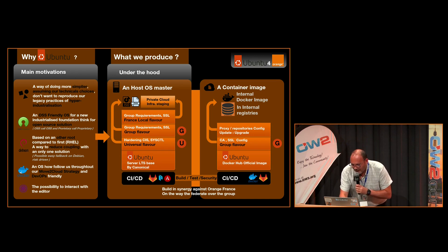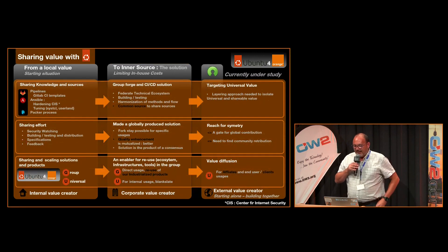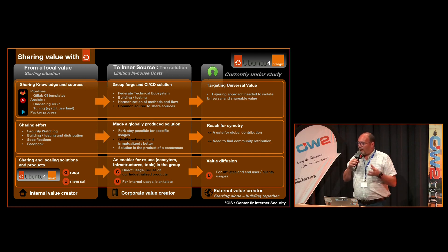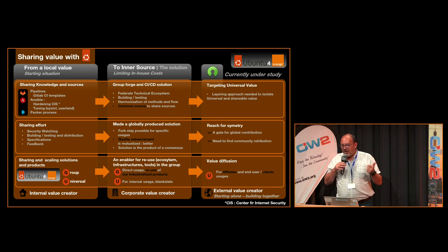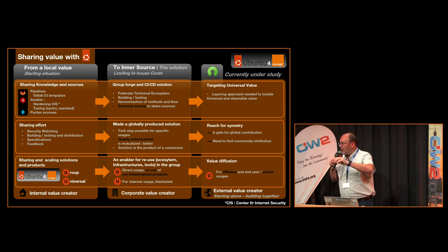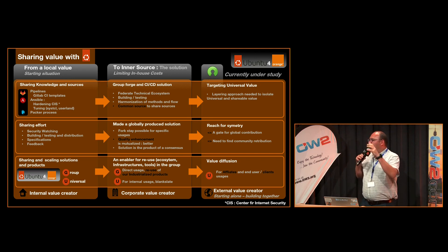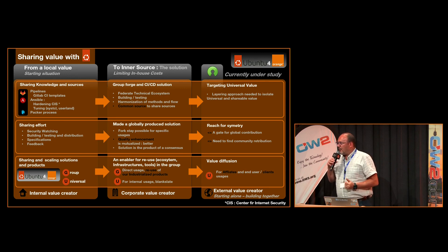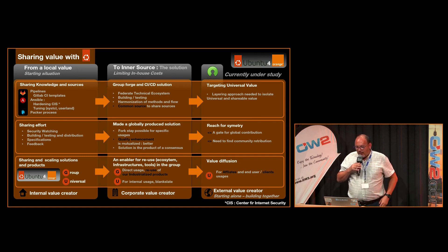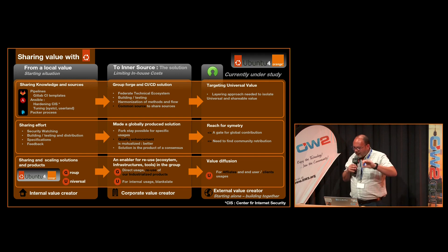So we are going to speak about InnerSource. Using open source software, for us, is generally about sharing value. So logically, we want to share — sharing knowledge and sources, sharing our way to build, to test, to deliver. The goal is to move from a local scope value for our historically defined Ubuntu to a universal value. We already use Ubuntu, but we want to refactor our solution to be able to generalize it over the group. The way to do this is InnerSource — a solution to build all together, targeting what to share, how and where to share, corresponding to the scope of the value.